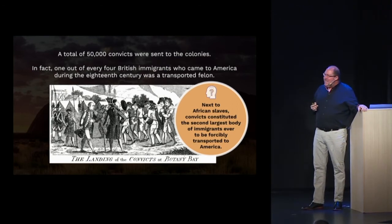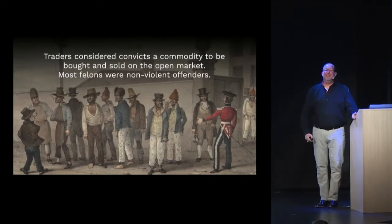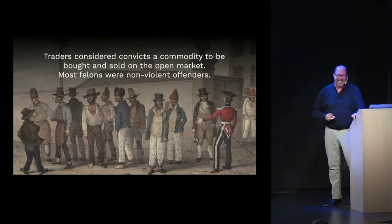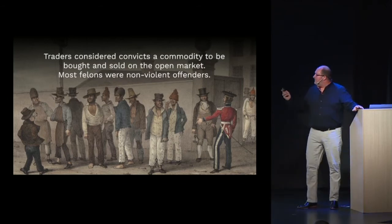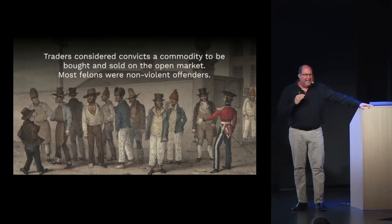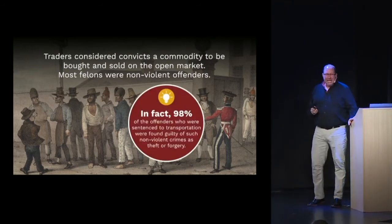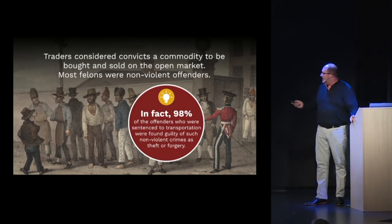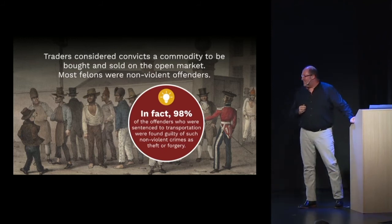Traders considered convicts a commodity to be bought and sold on the open market. Most felons, however, were non-violent offenders. Ninety-eight percent of people sentenced to transportation — what they called the trip to Australia — were found guilty of non-violent crimes such as theft or forgery. Many colonists resented the government for sending them.